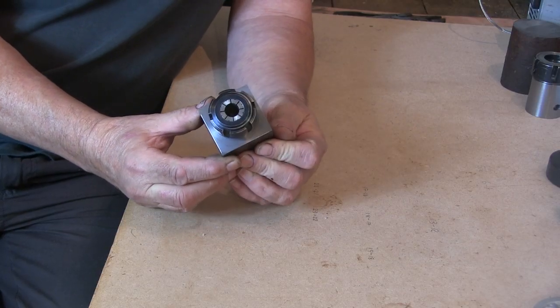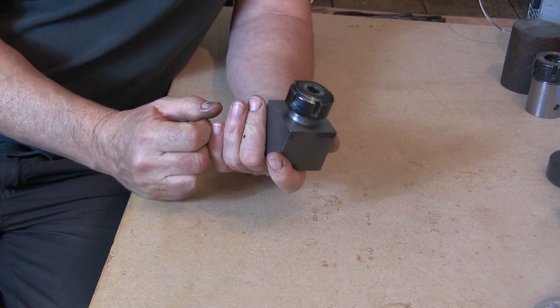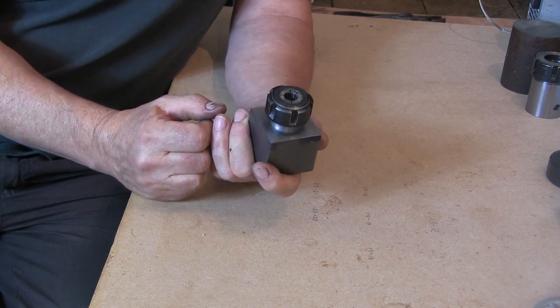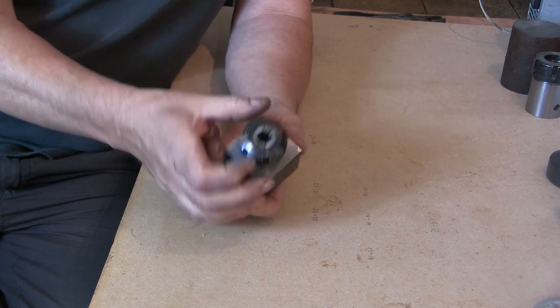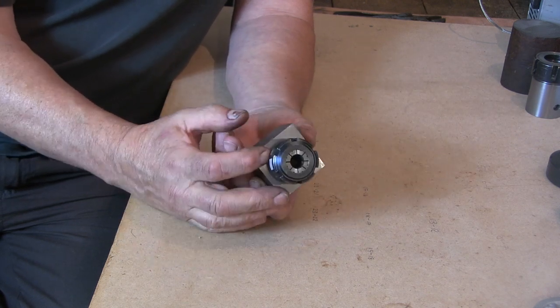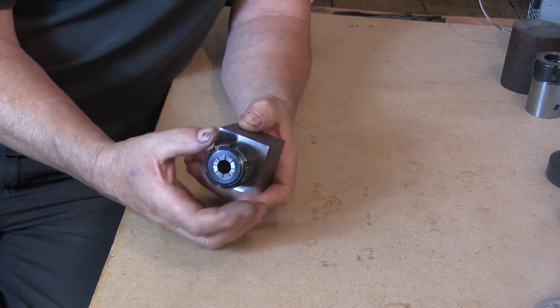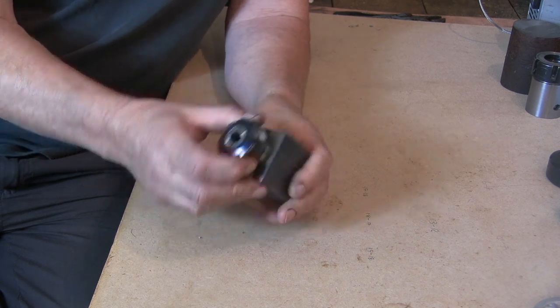Yeah, this was the collet block I made. Was meant to be an ER32, ended up an ER25 because I ballsed up the thread on it, but not to worry, it's still a usable bit of kit.